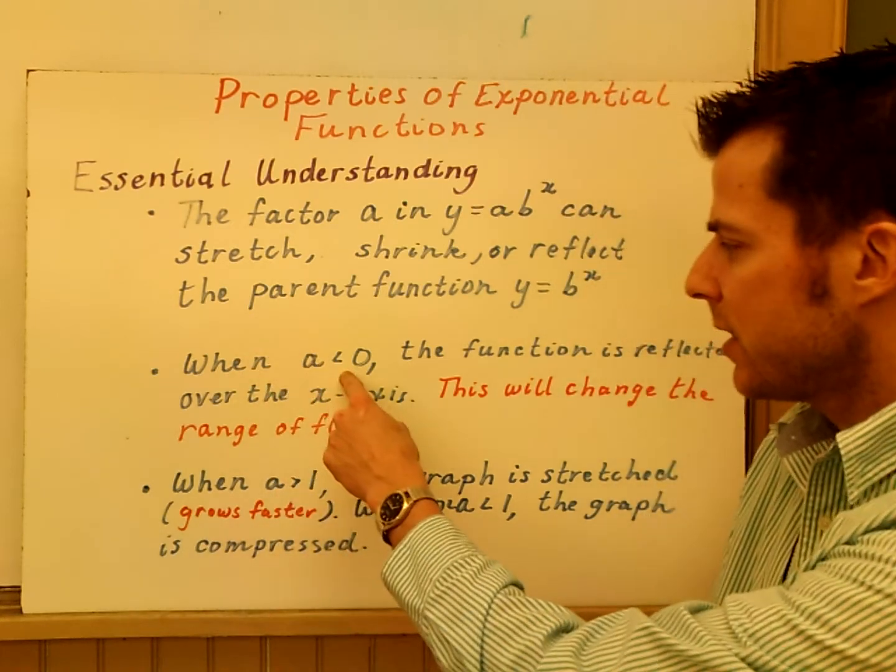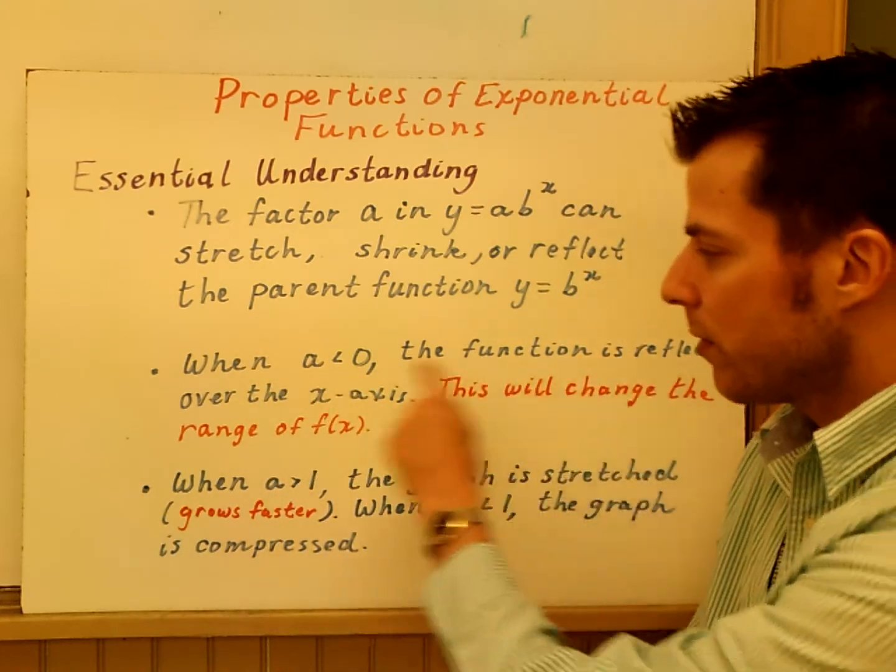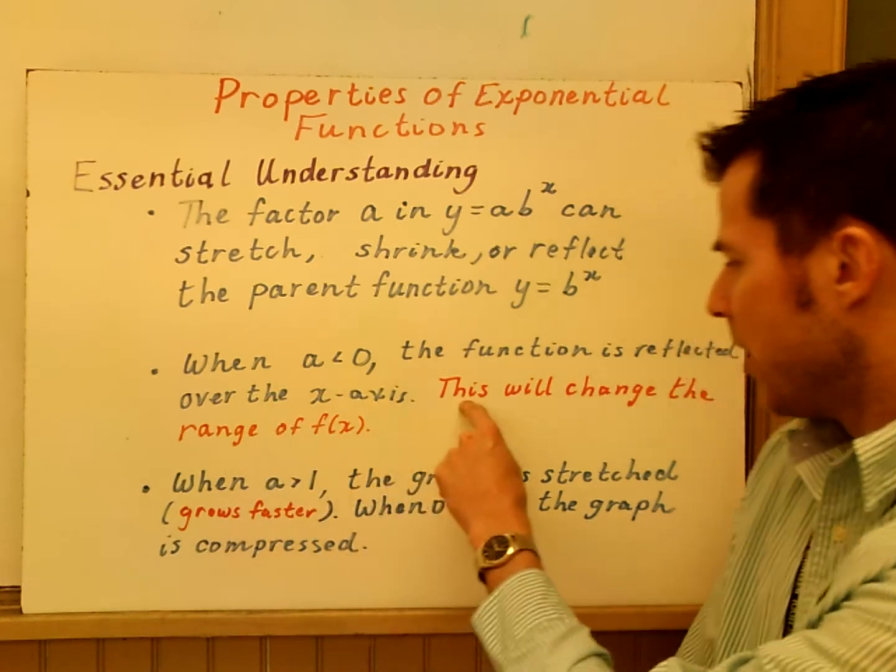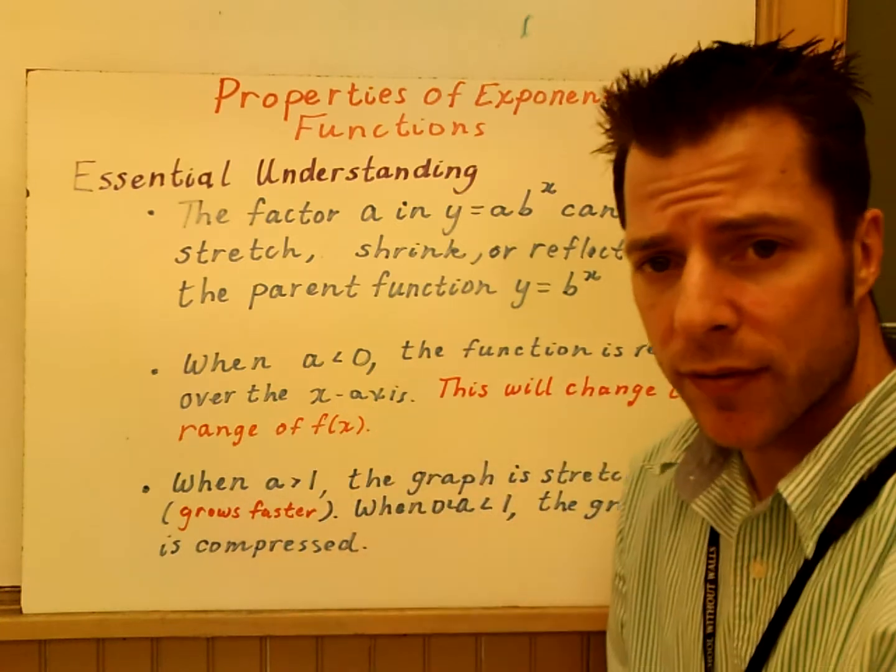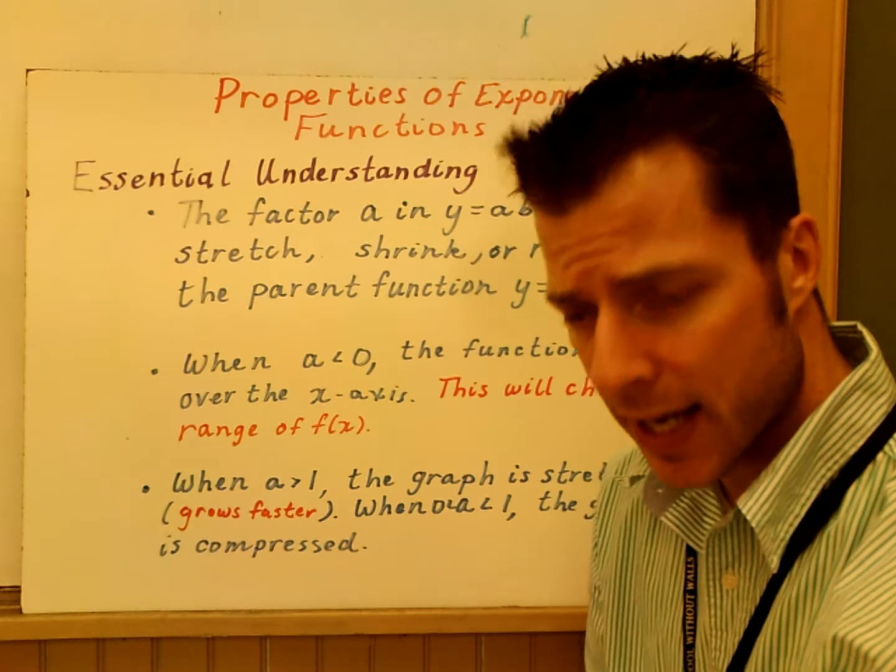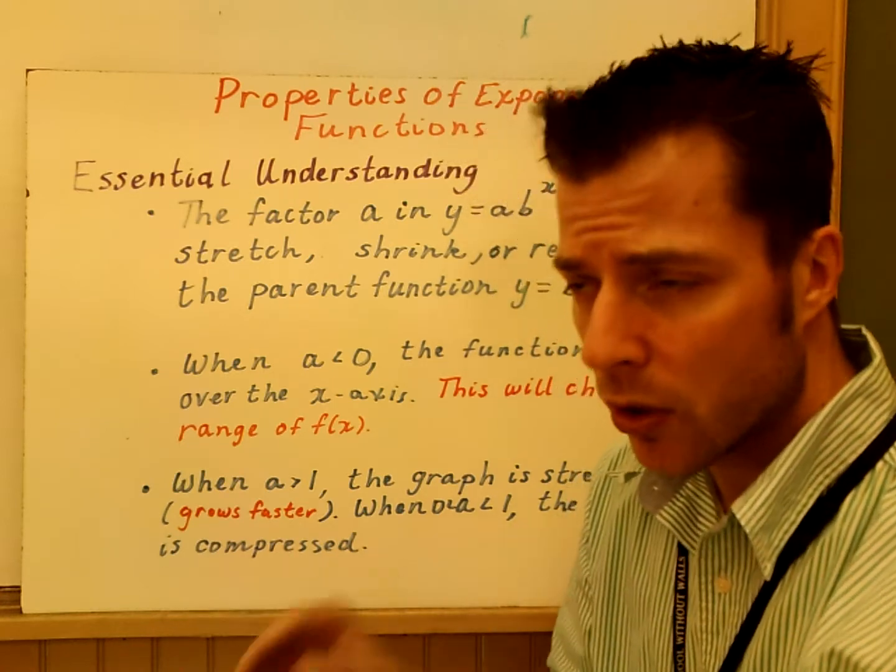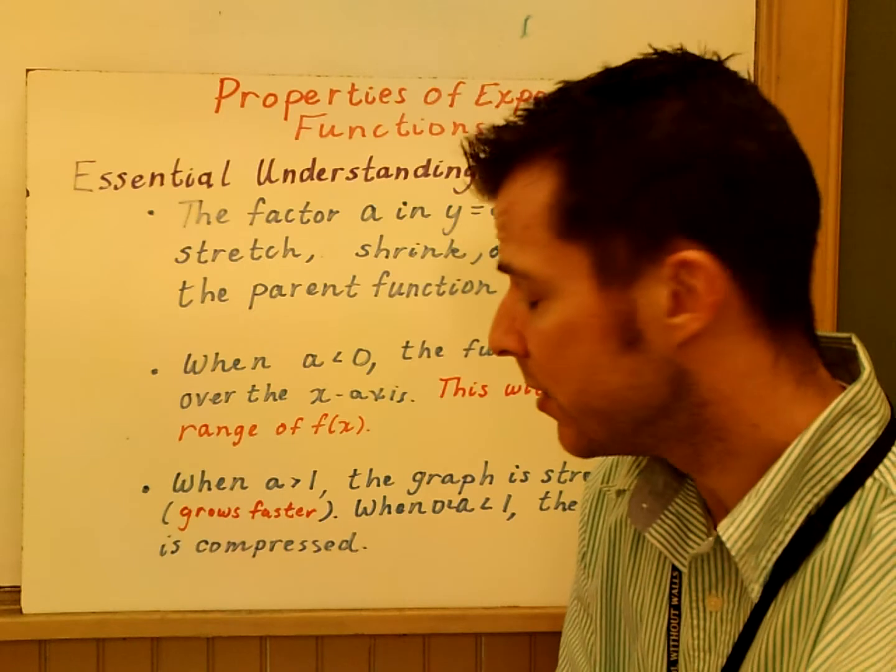Just know when A is less than 0, the function is going to be reflected over the X-axis. This will change the range of your function. So you've got to be very careful. When A is negative, you're switching that range from Y is greater than 0 to Y is less than 0.